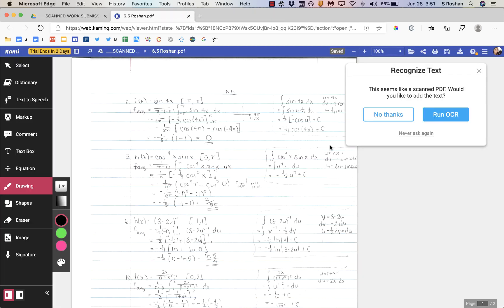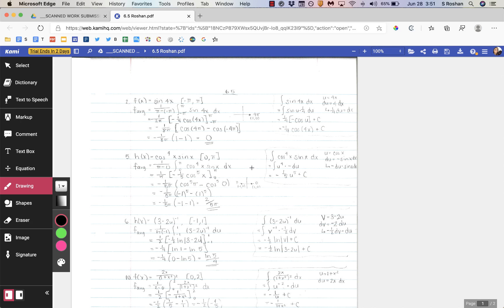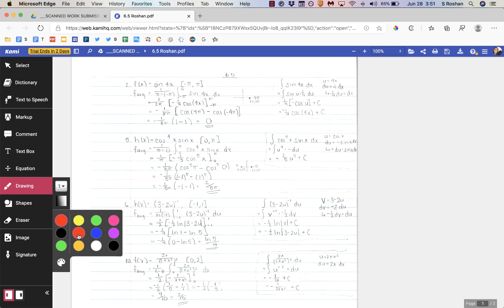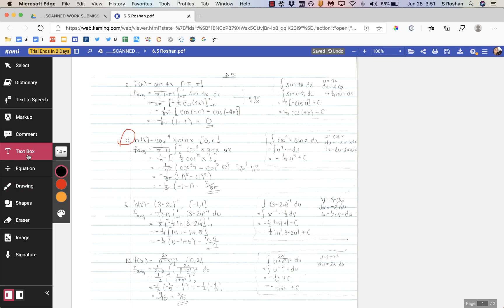Now that PDF loads up and I can run OCR, which would mean I'd be able to search anything within the page. I'm not going to do that right now. And then I can just use the inking tools to ink anything up that I need to. I can also use the text tool to type.